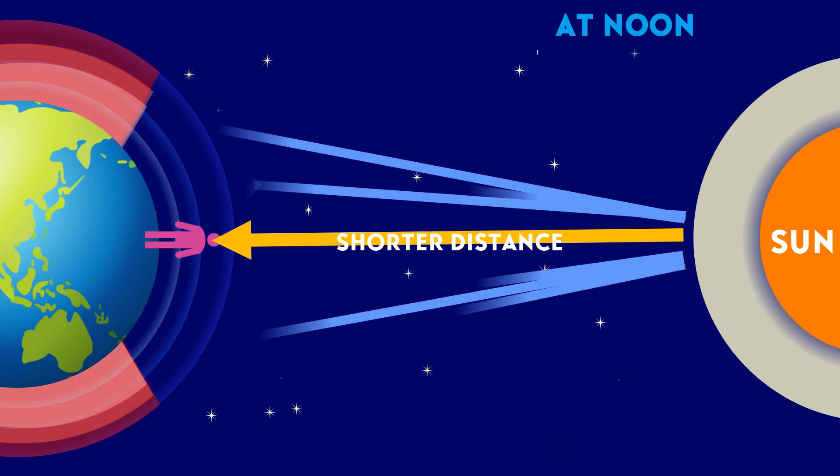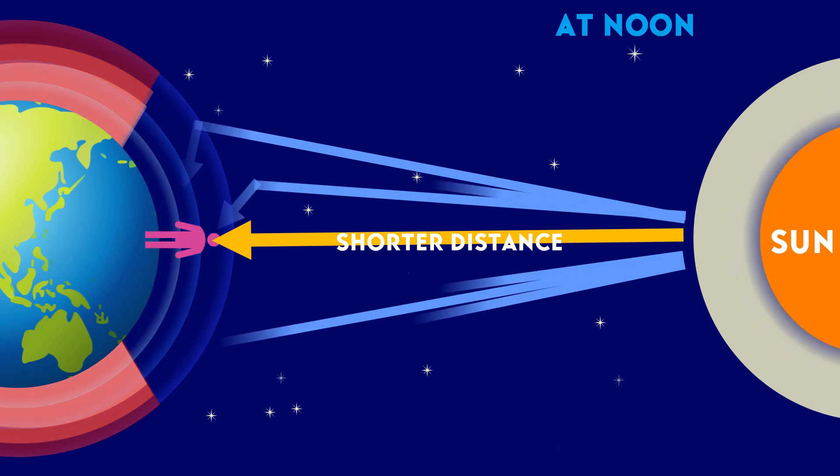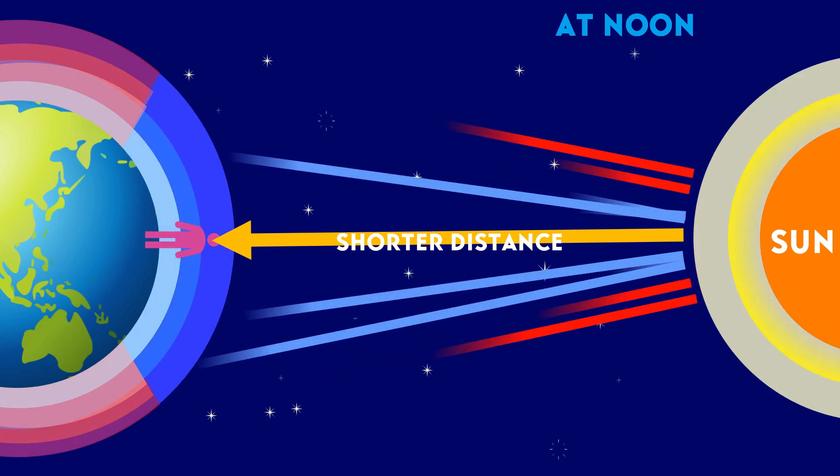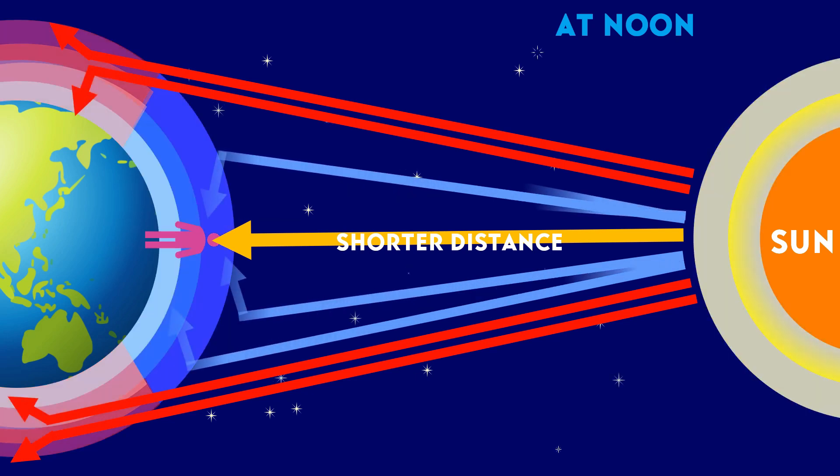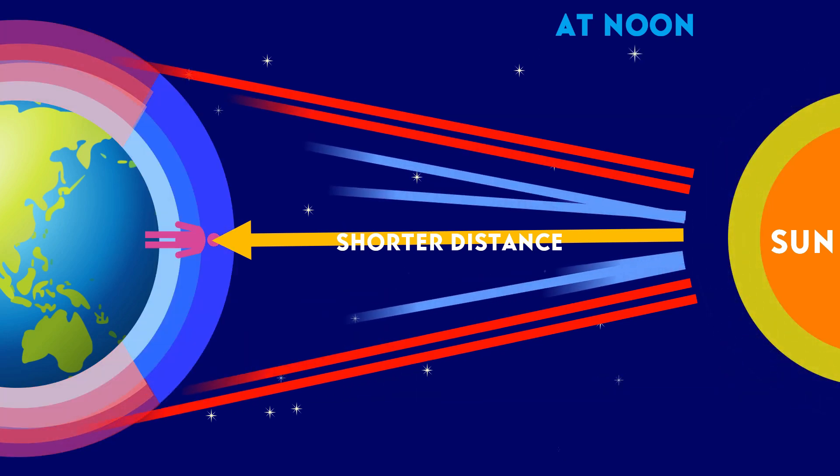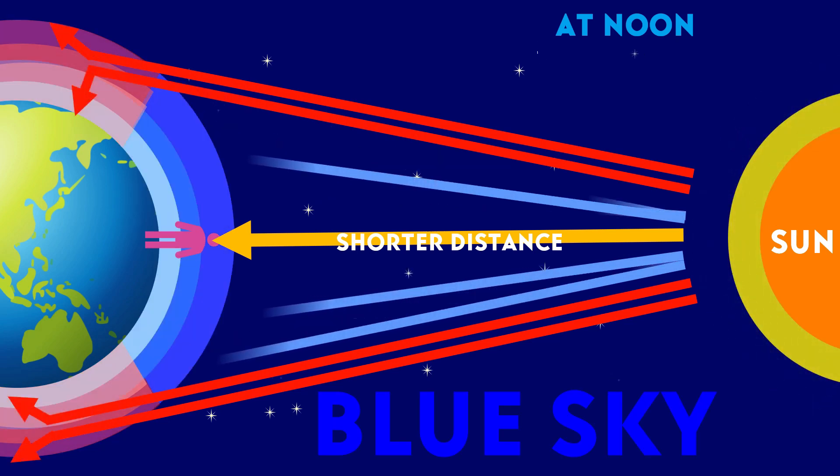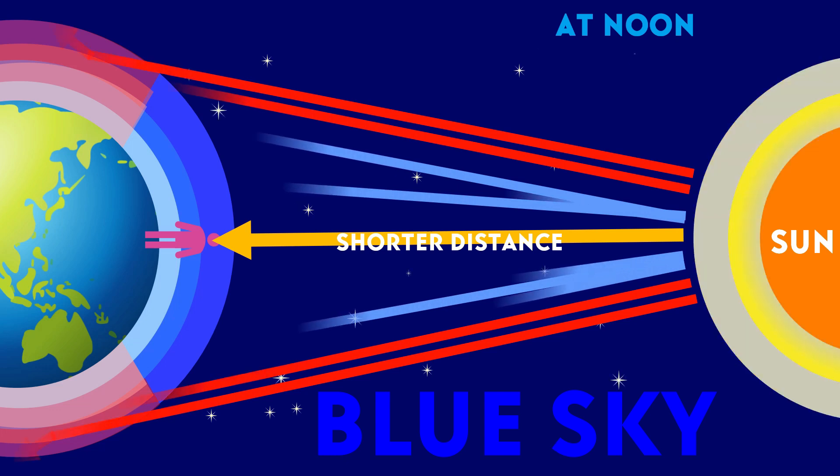The blue light with short wavelength is scattered the most in all directions by fine particles in the atmosphere. And due to the shorter distance traveled, it is able to reach the observer before being scattered away. Therefore, the blue light reaches us from all directions in the sky causing the sky to appear blue.